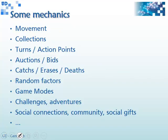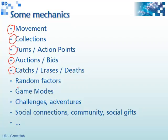Here you can see some examples of mechanics we could consider in a given game: movement of the player character, computer-controlled objects, collections of objects to take, player turns in multiplayer games, action points limiting each turn, actions for buying items, ways of deleting or killing an object or character in a game. We also have random factors, game modes and levels, complex mechanics like challenges that are usually combinations of simple mechanics, and all the social aspects in multiplayer games and so on.